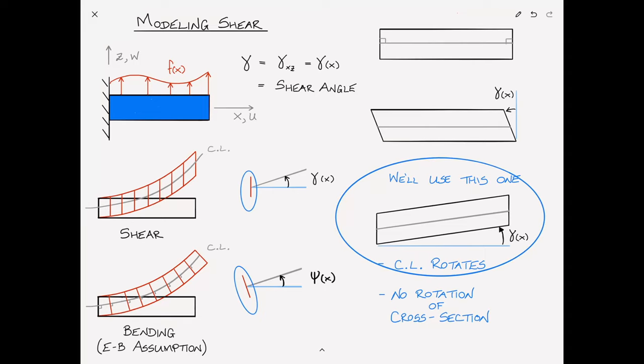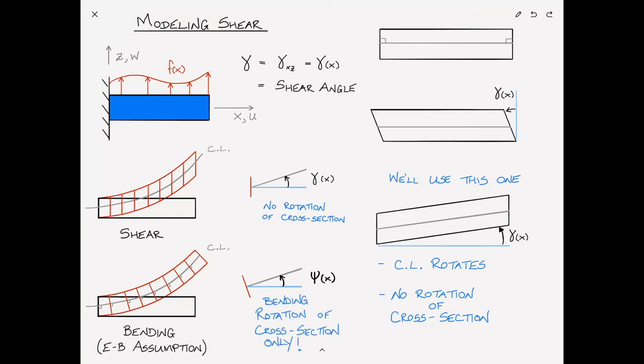Now again, this is consistent with using the second model. Had we instead used this first model, and I mention this only because some explanations do use that. Well, if we looked at the first model, it would only cause a rotation of the cross section and not a rotation of the center line. And in that case, the rotation of the center line would be due to bending alone. But again, we are not going to use this version of the model, but we're going to use this one instead. So shearing causes only a rotation of the center line and the horizontal surfaces, but it causes no rotation of the cross section under this model.